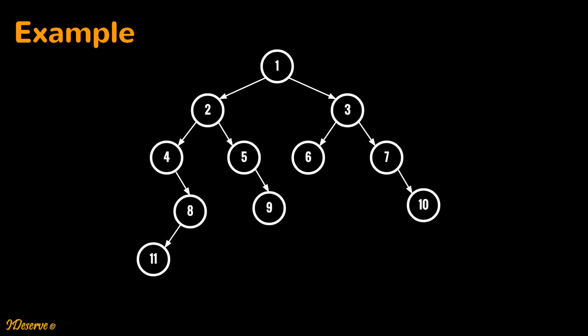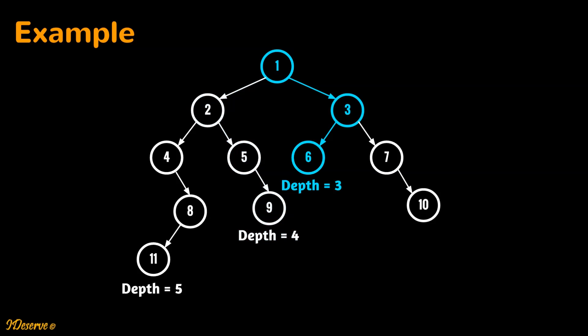Let us take one example to understand the problem. Consider the following binary tree. The first path from root to leaf consists of nodes 1, 2, 4, 8, and 11 — depth is 5. The next path consists of nodes 1, 2, 5, and 9 — depth is 4. The next path has nodes 1, 3, and 6 — depth is 3.